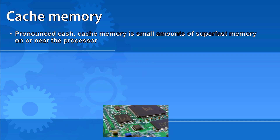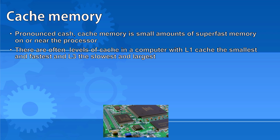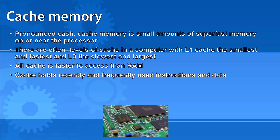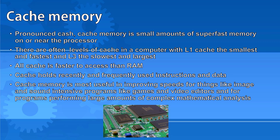Cache memory is small amounts of super fast memory on or near the processor. There are often levels of cache within a computer, with level one cache being the smallest size but also the fastest, and level three being the slowest and the largest. All cache is still faster to access than RAM. Cache holds recently and frequently used instructions so that they can be fetched more quickly if needed again. Cache memory is most useful for improving speeds in image and sound intensive programs like games and video editors, and for programs performing large amounts of complex mathematical analysis.